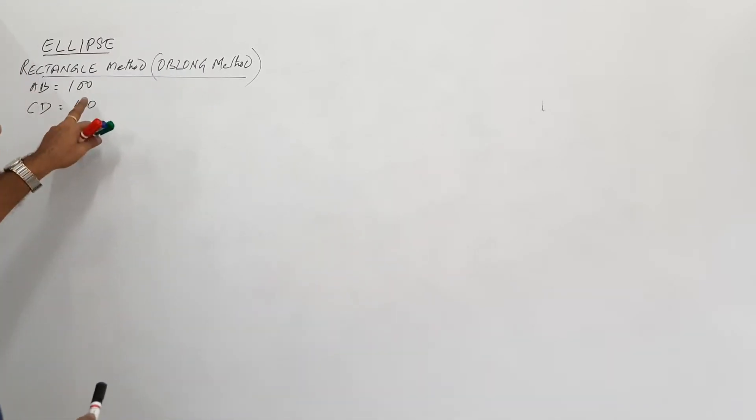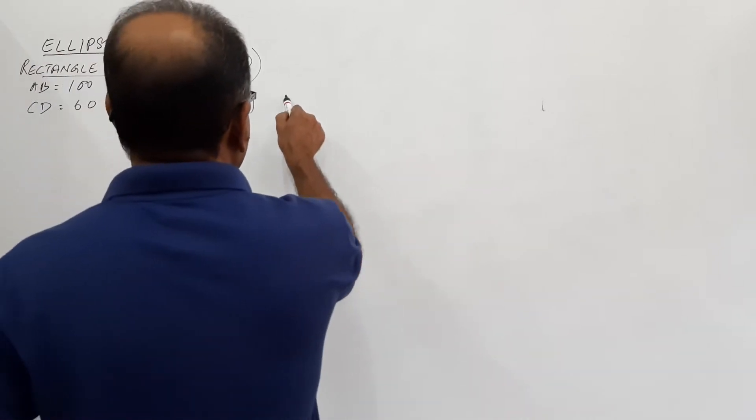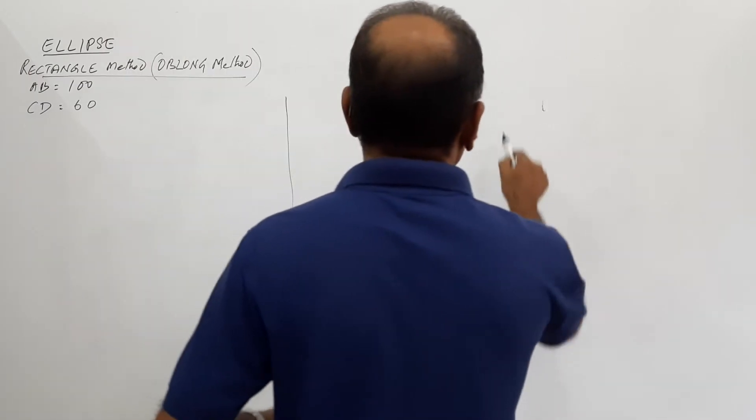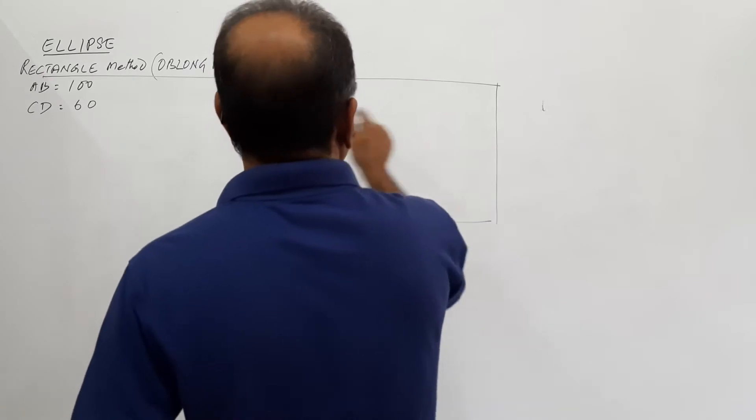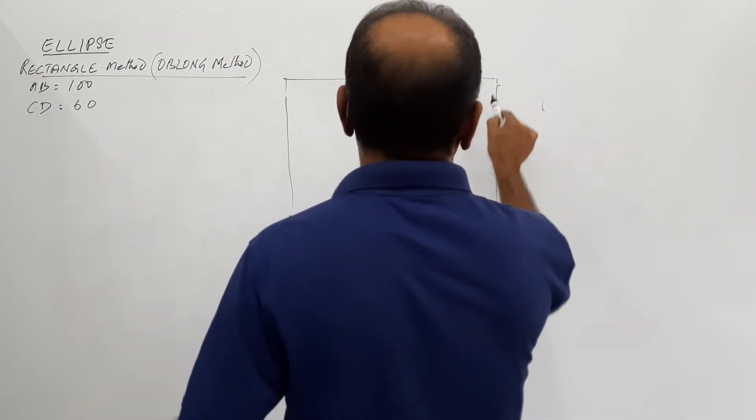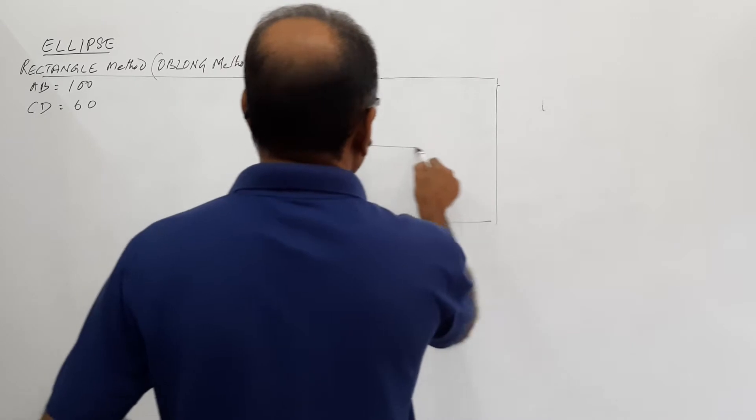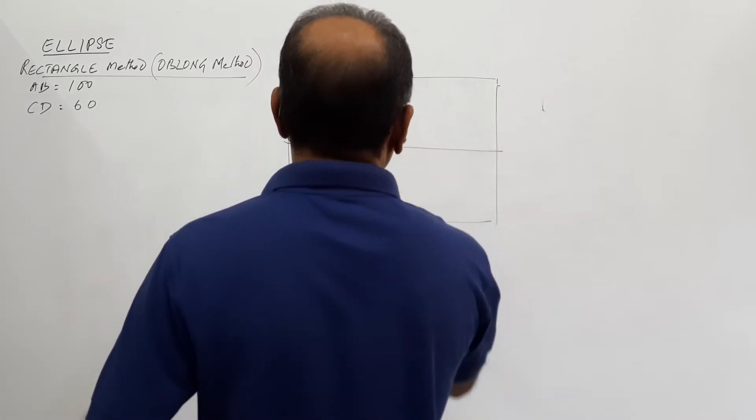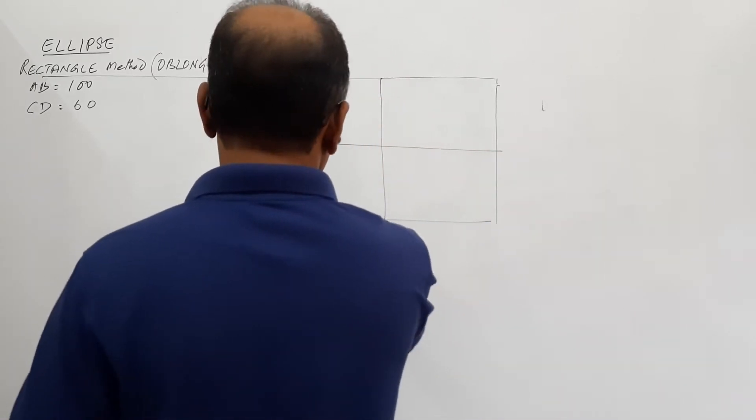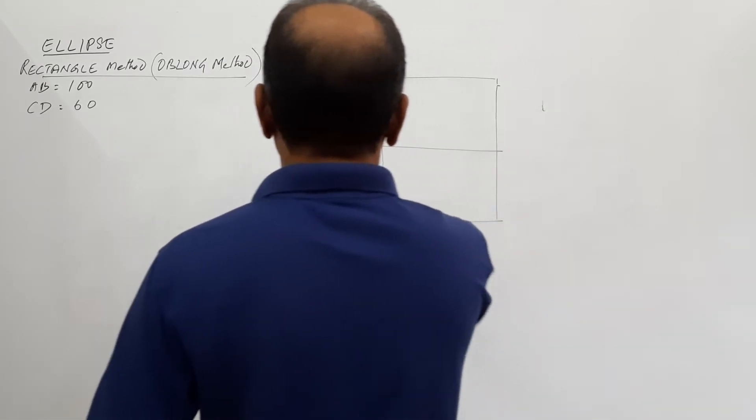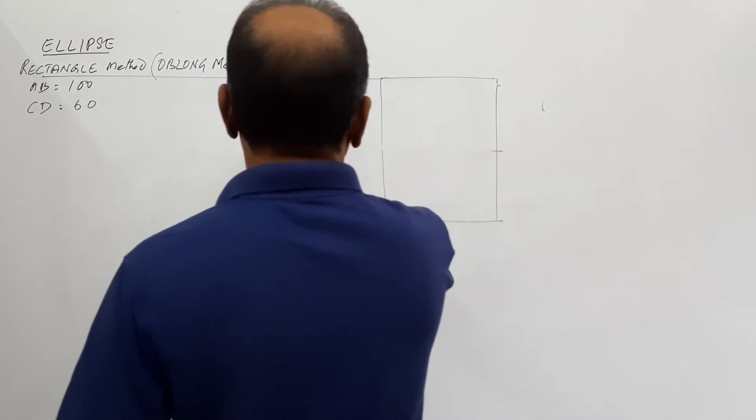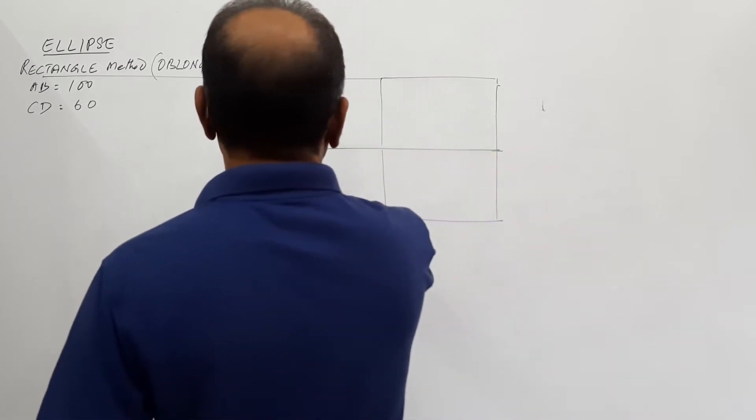The question is saying, major axis is 100, minor axis is 60. So I construct a rectangle. I construct a rectangle whose sides are 100 and 60.